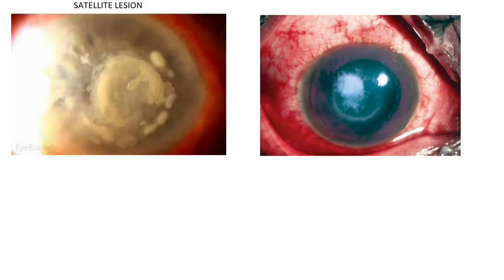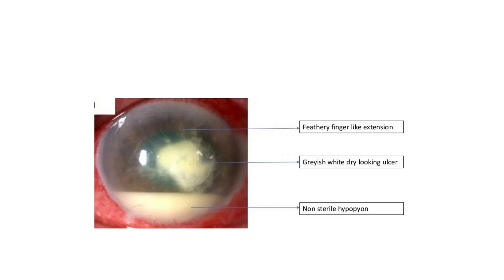This is the clinical picture of Fungal Corneal Ulcer. You can see the dry and grey coloured ulcer with satellite lesions. The next image shows the Wessely ring and feathery margins of the ulcer. Another image demonstrates the non-sterile hypopyon, the greyish white ulcer with feathery margins.